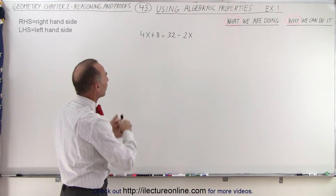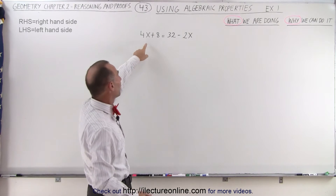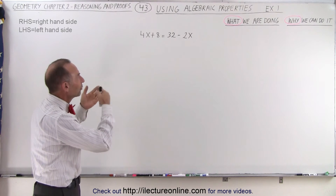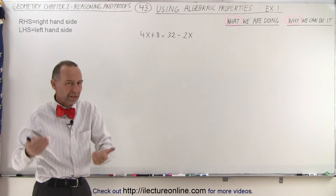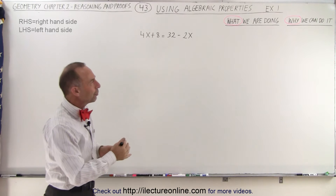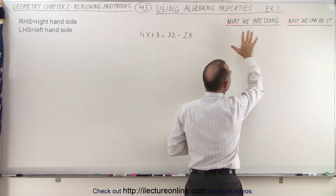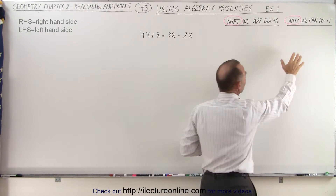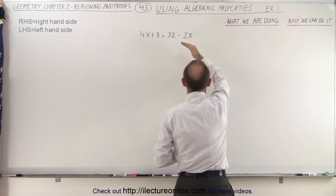Here we have an algebraic equation — what we call a linear equation because x is only raised to the first power. What we're going to do is simply solve this equation for x; we're going to prove that x equals a particular value, so it's a pseudo-proof. On the right side we're going to describe what we're doing and then why we can actually do that, because we must give a valid reason why we're able to do what we just did.